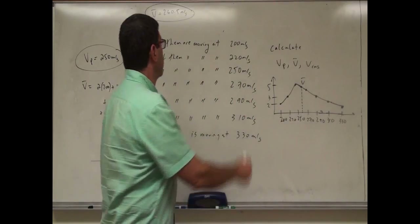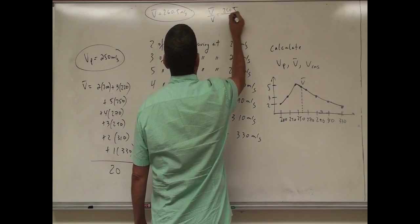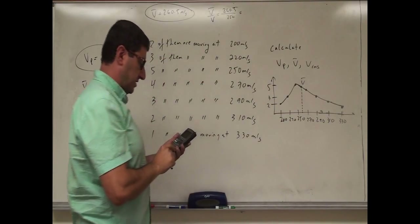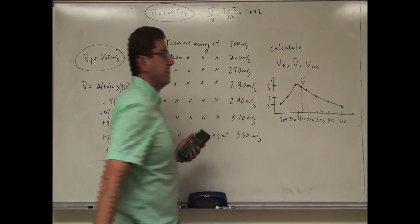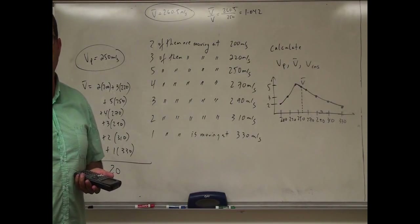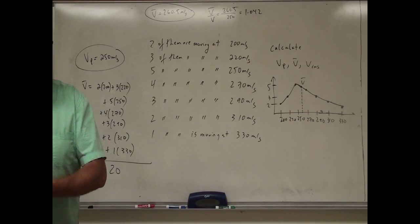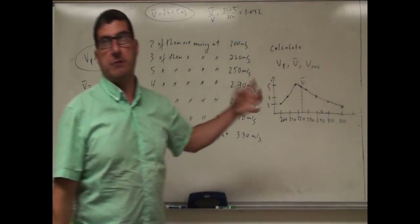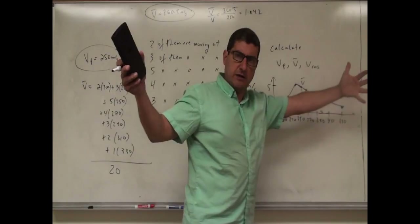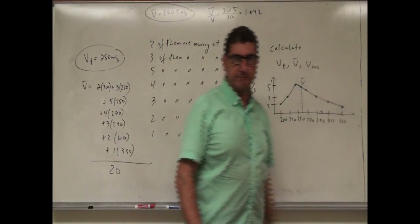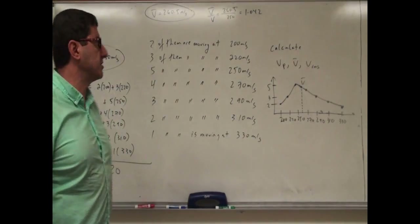If we find the ratio V_average over V_probable, that's 260.5 over 250, which gives about 1.04 — so about 4% larger. Remember, it was supposed to be 12.8% larger in theory. That's for a large number of particles distributed from 0 to infinity. With only these data points, we get 4% larger.